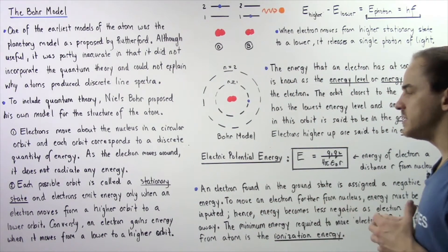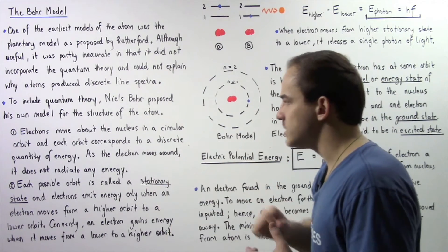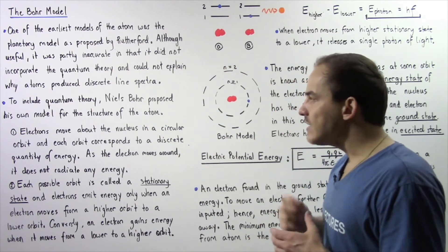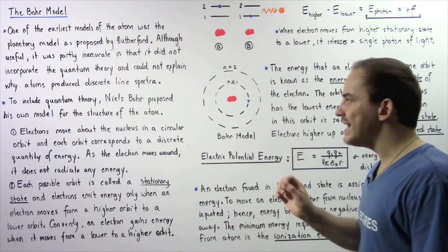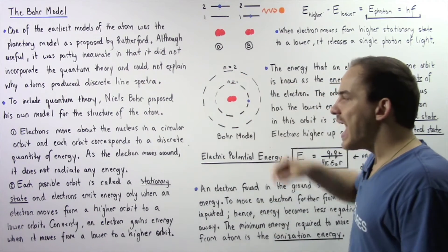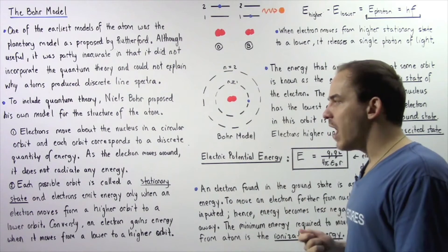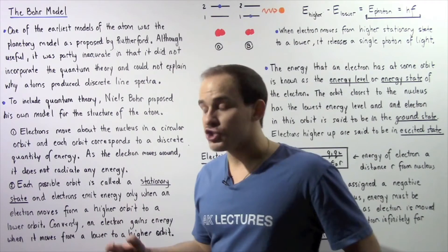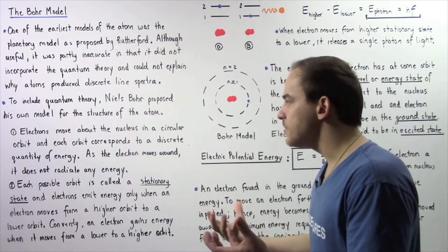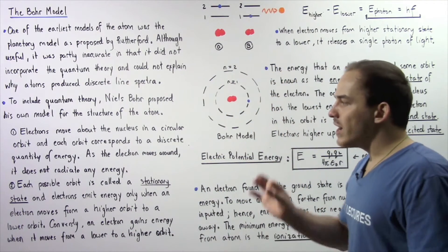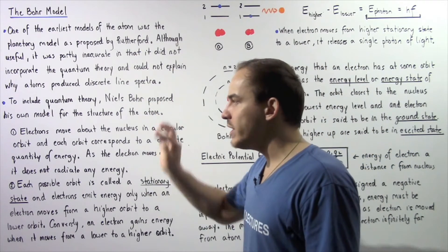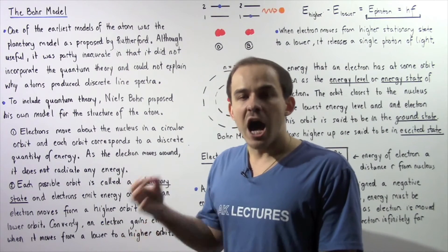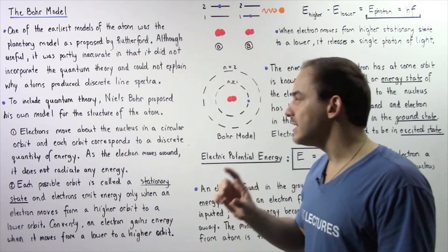The Bohr model can essentially be summarized in two statements. Statement one: electrons move about a nucleus in a circular fashion, and each orbit corresponds to a discrete, quantized amount of energy. Niels Bohr incorporated the quantum theory of energy. An electron cannot exist between any two given orbitals — electrons can only be found on an orbital and not in between.